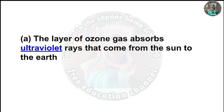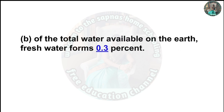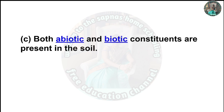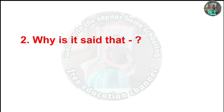First question: Fill in the blanks. A) The layer of ozone gas absorbs ultraviolet rays that come from the sun to the earth. B) Of the total water available on the earth, fresh water forms 0.3%. C) Both abiotic and biotic constituents are present in the soil.